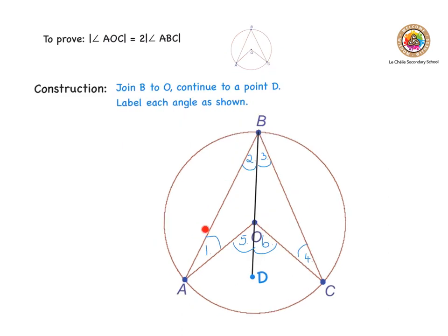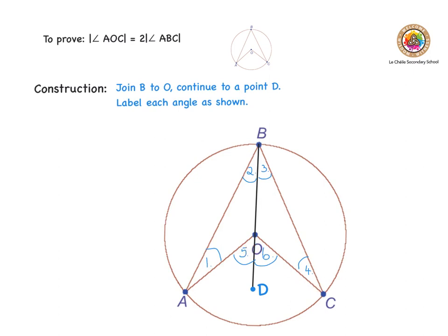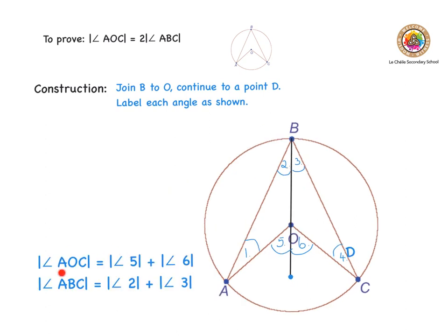Each angle is now labeled in the diagram — those are my six angles. Angle AOC is equal to angle five plus angle six, and angle ABC is equal to angle two plus angle three. So I need to prove that angle five plus angle six equals two times angle two plus angle three.